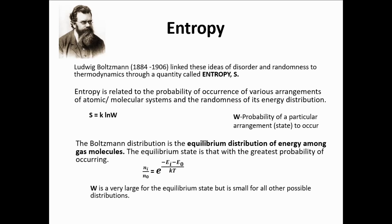The Boltzmann distribution is an equilibrium distribution of energy — it represents the most likely situation. It is formalized by the equation: Ni over N0 equals the exponential of the negative of the difference in energy between any two arrangements, divided by Boltzmann's constant and the thermodynamic temperature in Kelvin. This formula tells you the distribution of particles among any two energy levels, or equivalently the distribution of energy levels among particles.